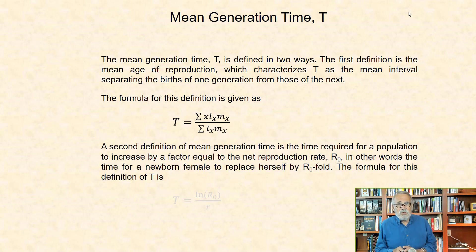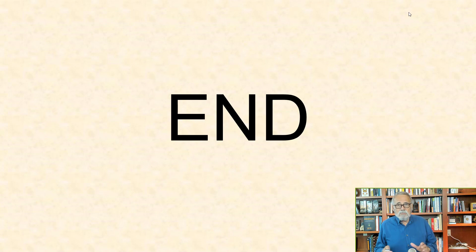A second definition of mean generation time is the time required for a population to increase by a factor equal to the net reproductive rate, R0. In other words, the time for a newborn female to replace herself by R0 fold. The formula for this definition of T is the natural log of R0 divided by the intrinsic rate of increase. This ends Module 5.4 on population parameter estimation and computation.